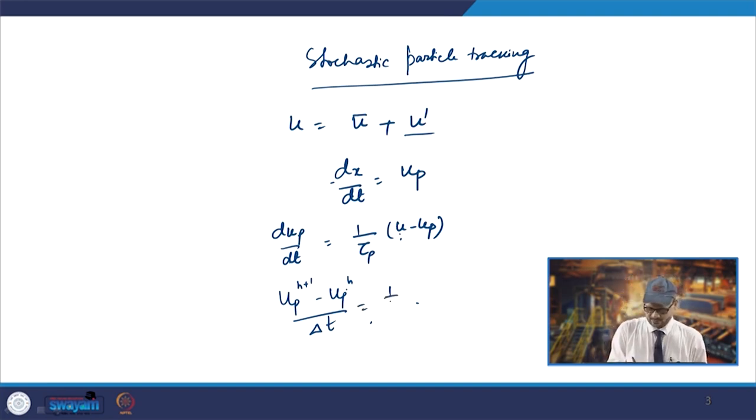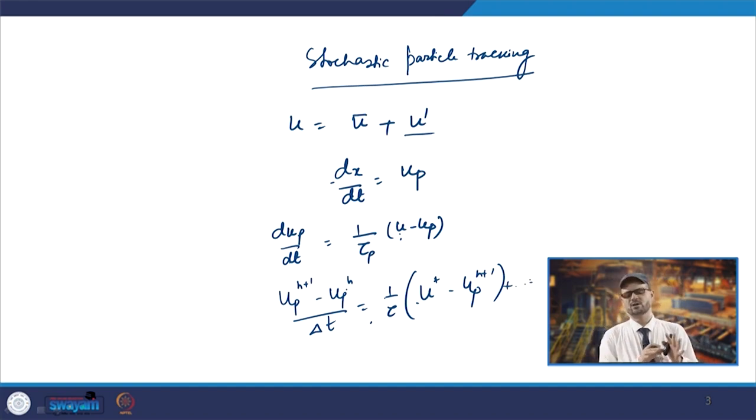Here u* is the average of u^n and u^(n+1), and u^(n+1) is further expressed in terms of u^n and the gradient of u^n. That is the normal way of solving these equations.